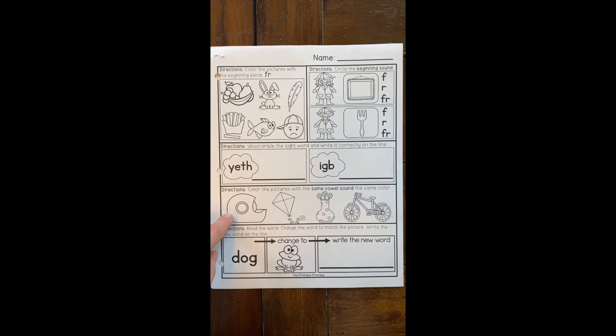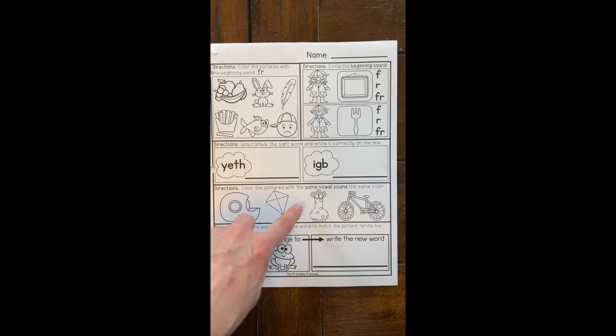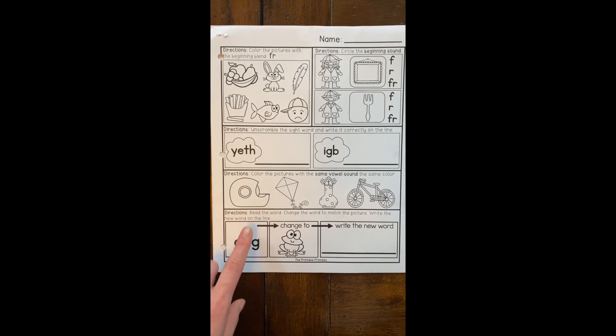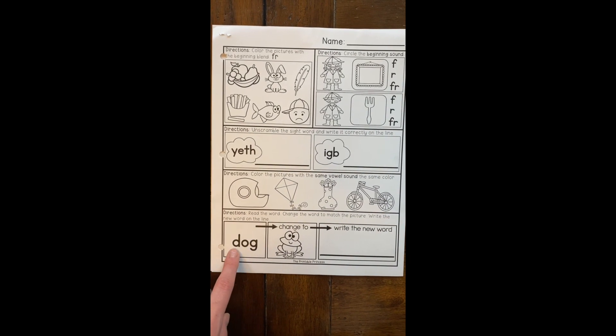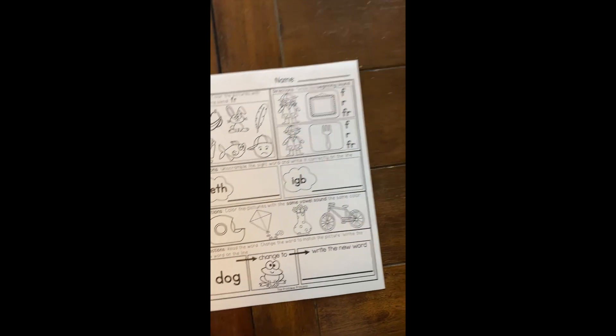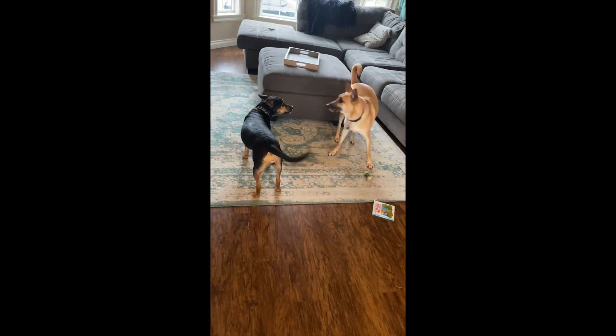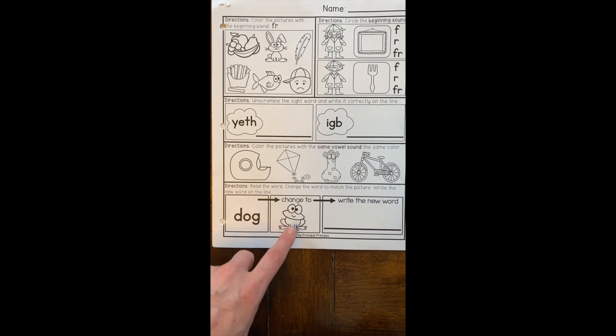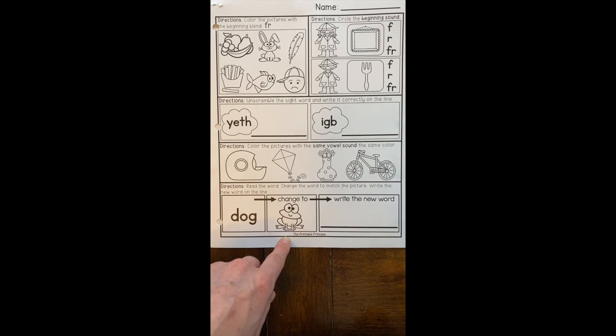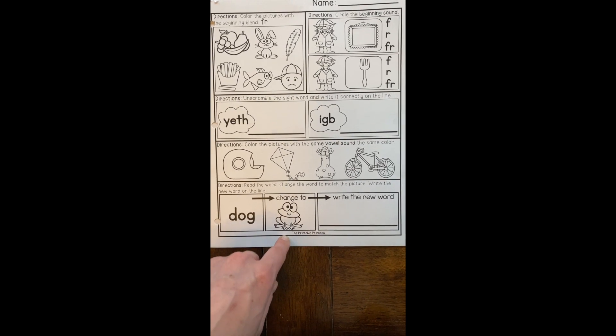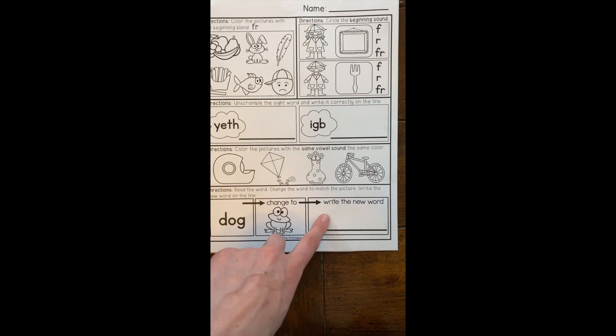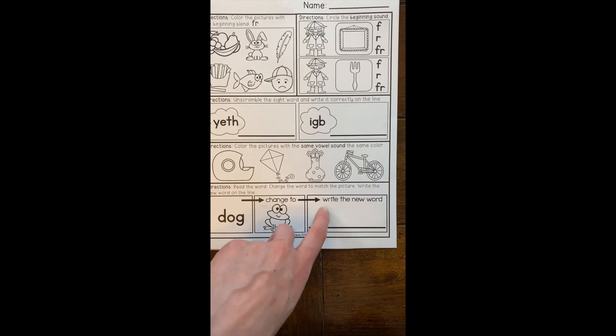And then you're going to color pictures with the same vowel sound. Remember our vowels are A, E, I, O, and U. So we have tape, kite, vase, and bike. Down here we have our word 'dog', like these two that are play fighting right now. We're going to be changing our word 'dog' to our word 'frog'. So what letters do we need for the word 'frog'? Go ahead and write the word 'frog' on this line right there.